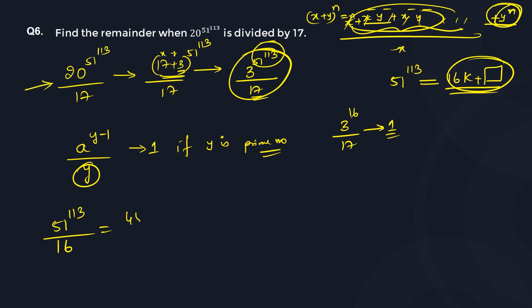51 can be written as (48 + 3) to the power of 113, divided by 16. Here 48 is a multiple of 16, so you only need to worry about the last term which is 3. So you need to find 3^113 divided by 16.